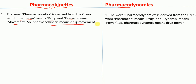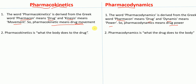Whereas the word pharmacodynamics is derived from the Greek word pharmacon, which means drug, and dynamics, which means power. So the meaning of pharmacodynamics is drug power, and the meaning of pharmacokinetics is drug movement.